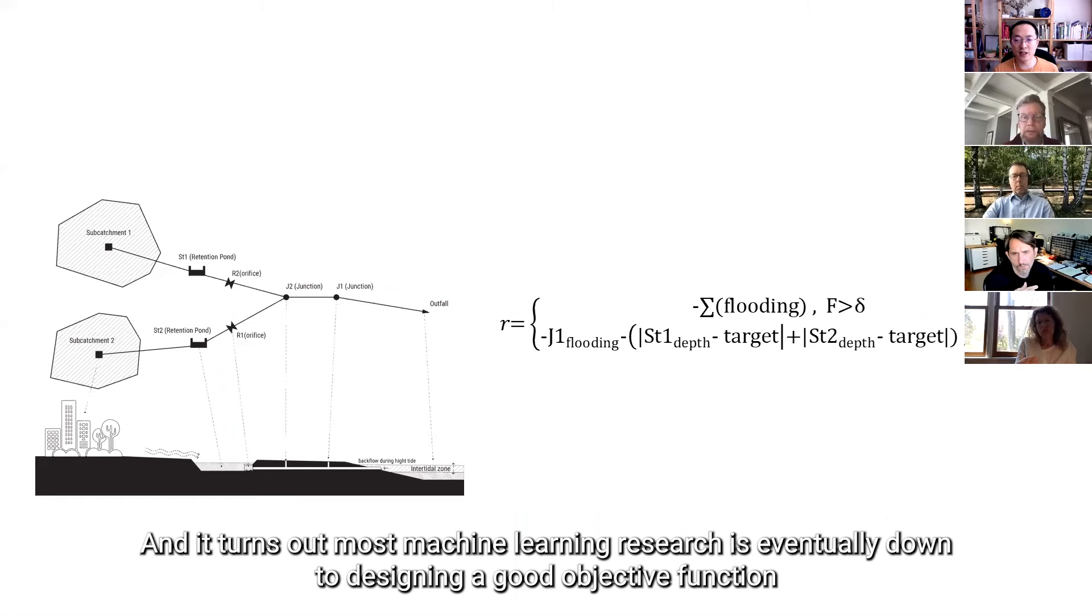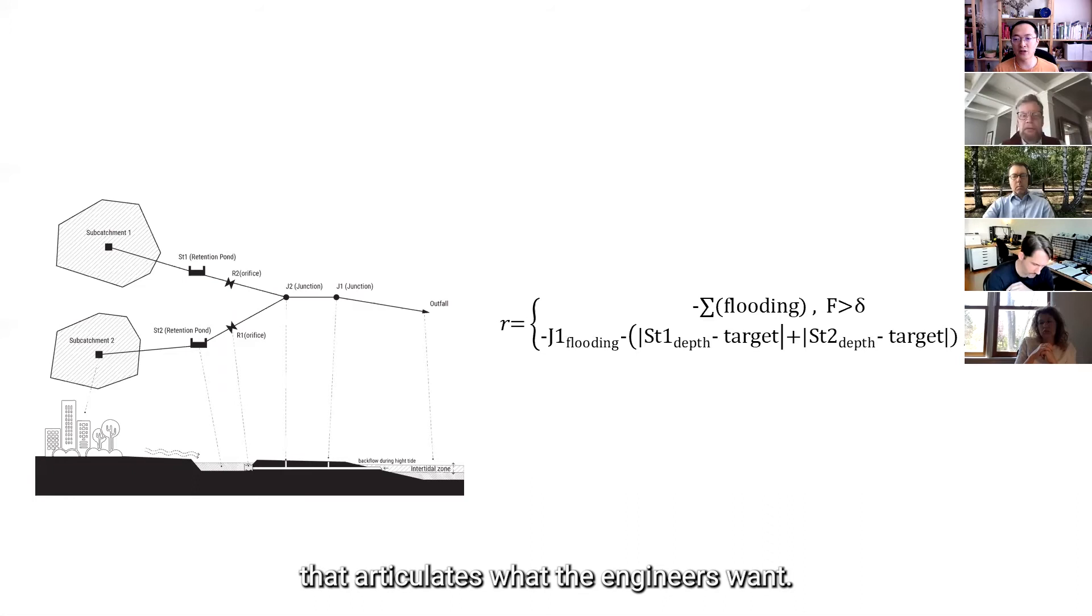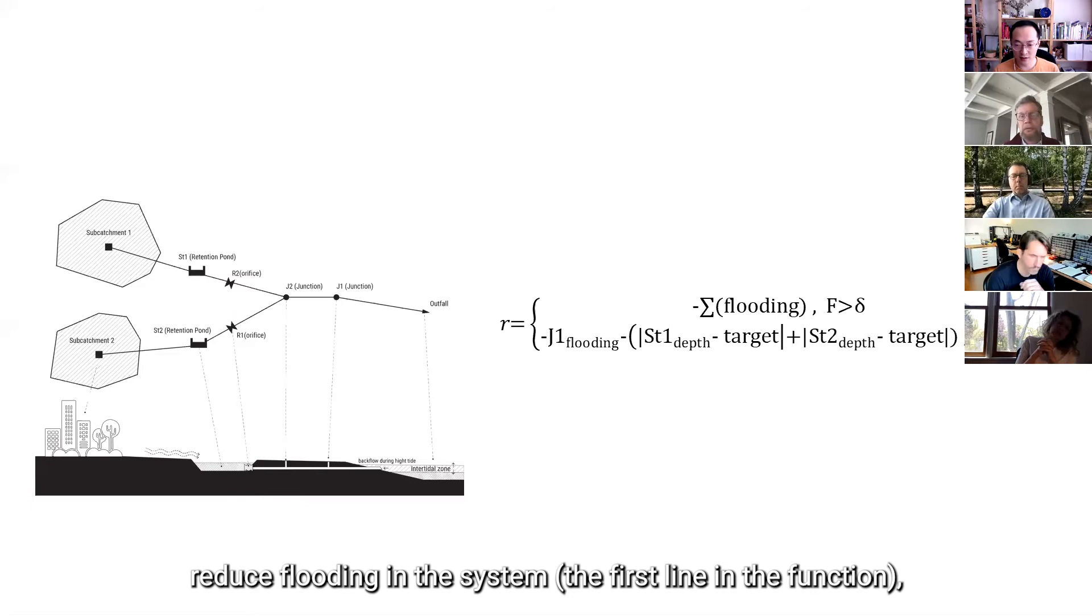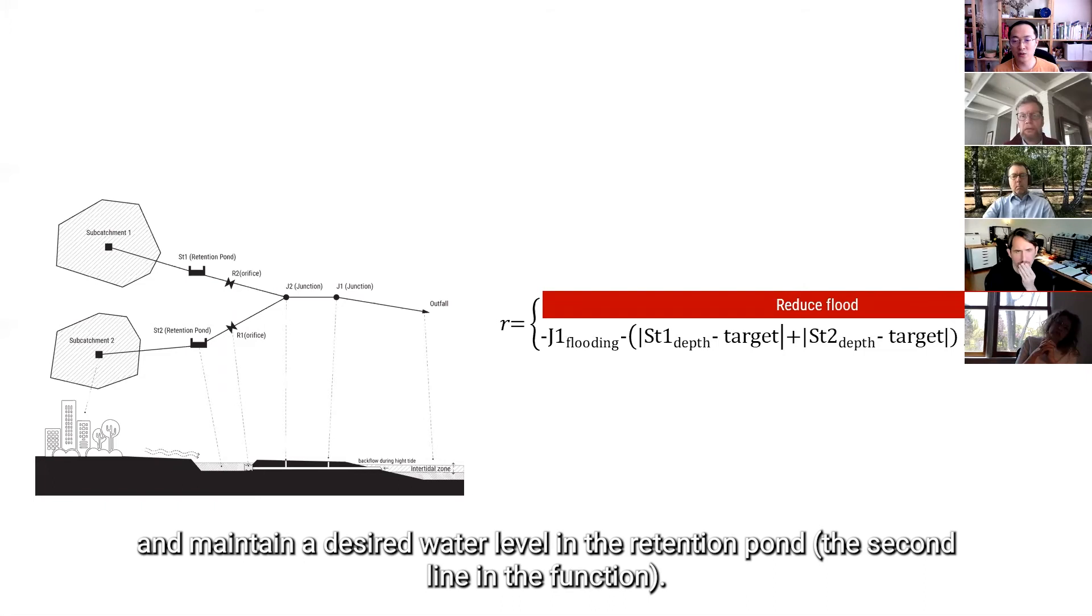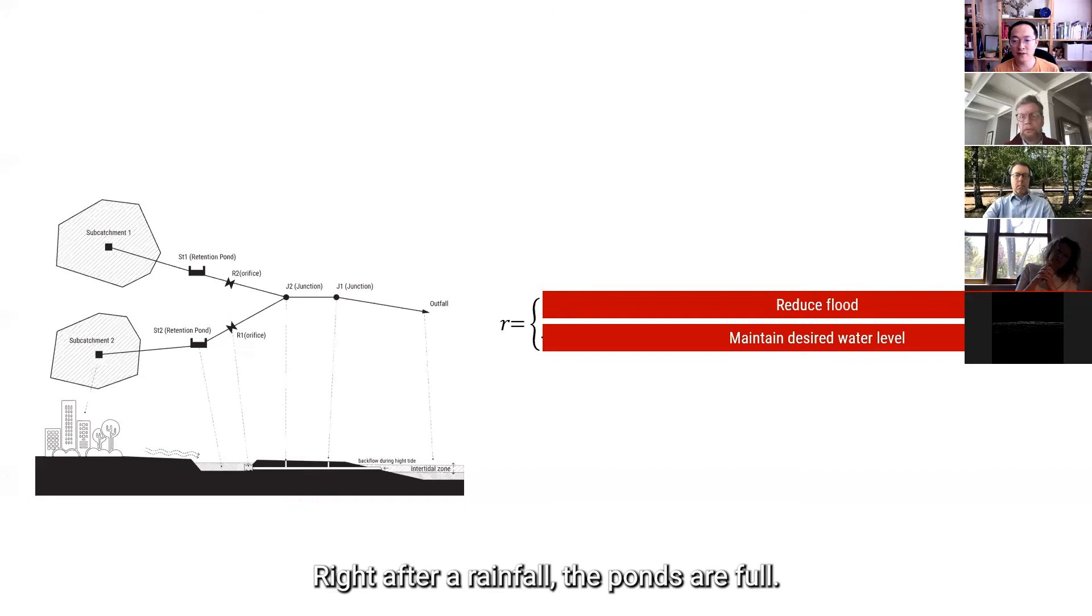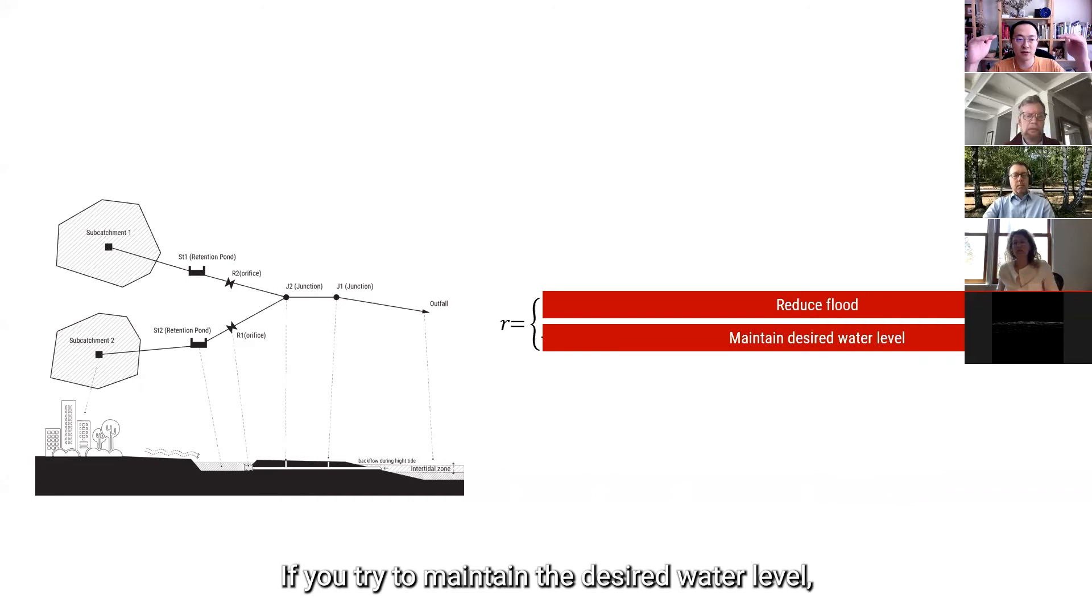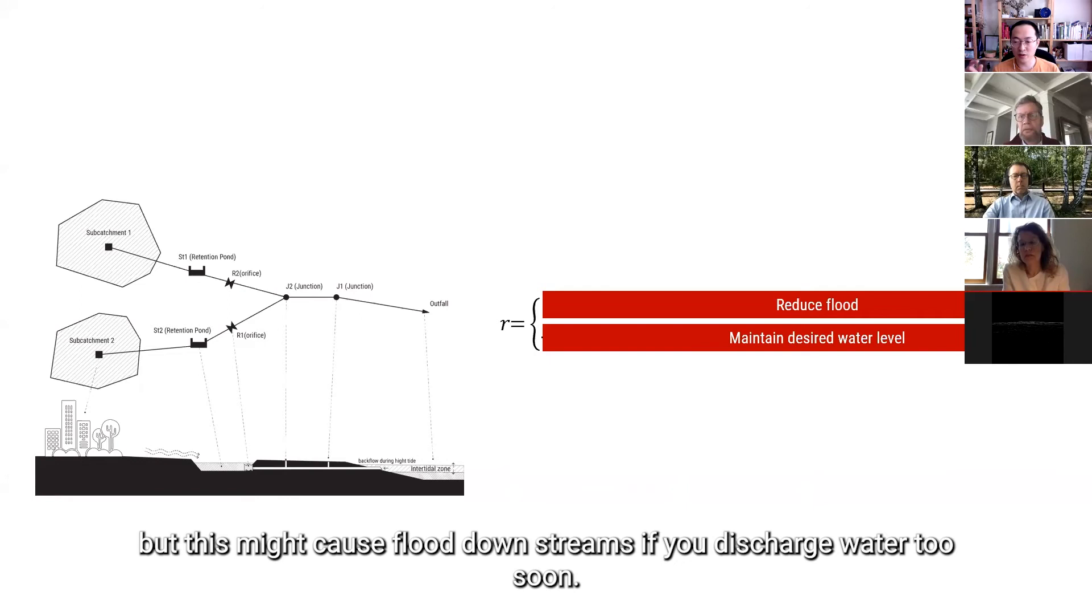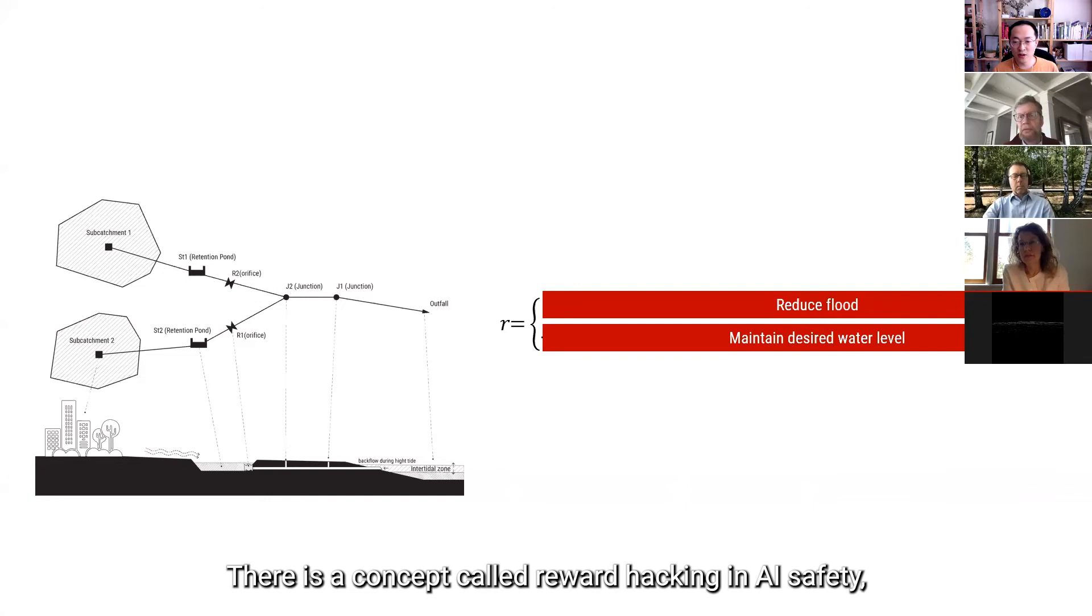And DRL is all about optimizing that reward function. So, the agent can get rewards in two ways. Reduce flooding in the system, which is the first line of the function, or to maintain a desired water level in a retention pond, the second line. So, there are actually a pair of conflicting goals. So, when you think about it, right after a rainfall, the ponds are full. And if you're trying to maintain the desired water level, you have to lower that water level by discharging water quickly. But discharging water might actually cause flooding downstreams if you discharge water too soon. So, there's a concept in machine learning called reward hacking. It's actually in AI safety. It's called reward hacking, meaning the agent can cheat the system to get more reward. Because when we articulate reward functions, we are essentially assigning values to goals. But for the AI system, whatever we didn't say in the reward function, we automatically assigned a zero value to it.